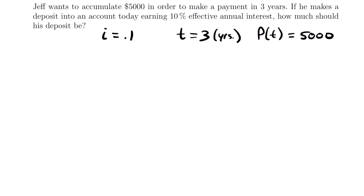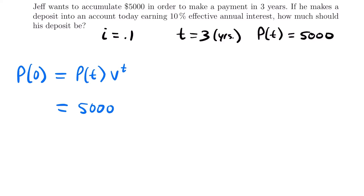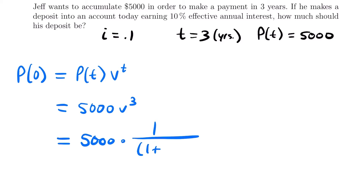So now we just have to calculate his present value. The present value at time zero is equal to the present value in the future at time T times our present value factor. Plugging things in, this is equal to 5,000 times V to the third power, because that's three years. We can write this as 5,000 times 1 over (1 plus 0.1) to the third power — that is our present value factor.